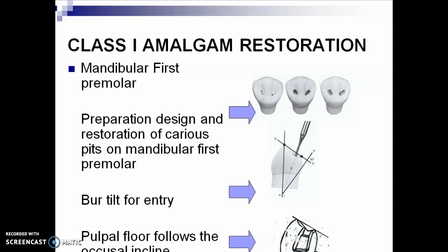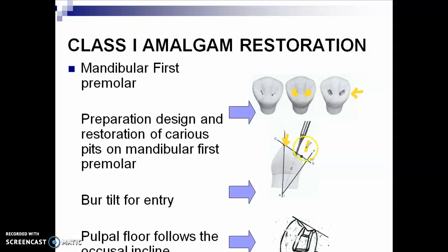For the mandibular first premolar, you can have a snake eye preparation. You just have to follow the mesial pit area and the distal pit area, and then you form two ovoid outline forms. This is how your restoration would look like. Just be careful with your mandibular first premolar, because it has a more prominent buccal cusp compared to your lingual cusp.